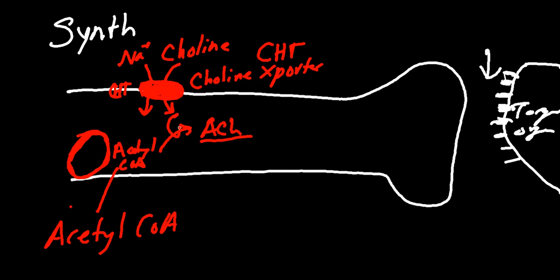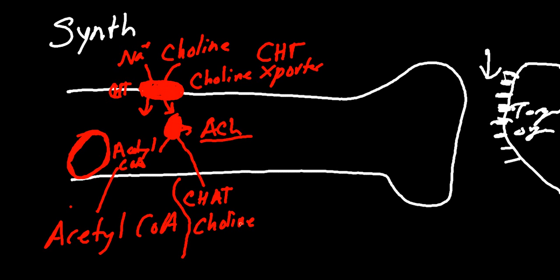We'll need another enzyme here. This enzyme is going to be called ChAT — choline acetyltransferase. The choline acetyltransferase enzyme is going to take an acetyl-CoA, take a choline, combine them — acetylcholine. Pretty easy, pretty basic.